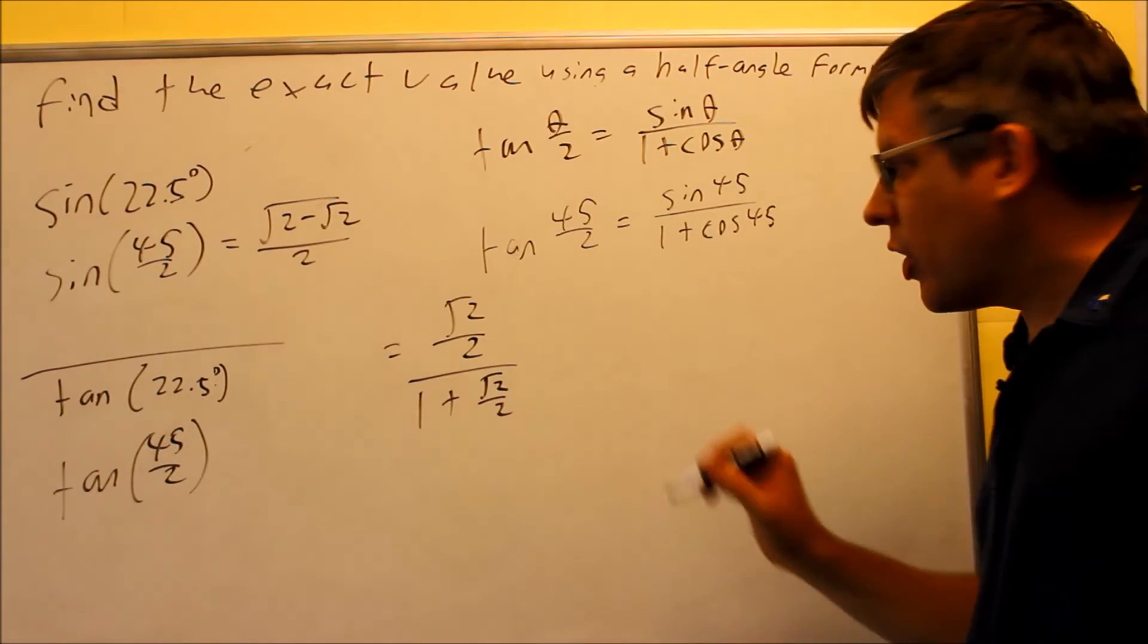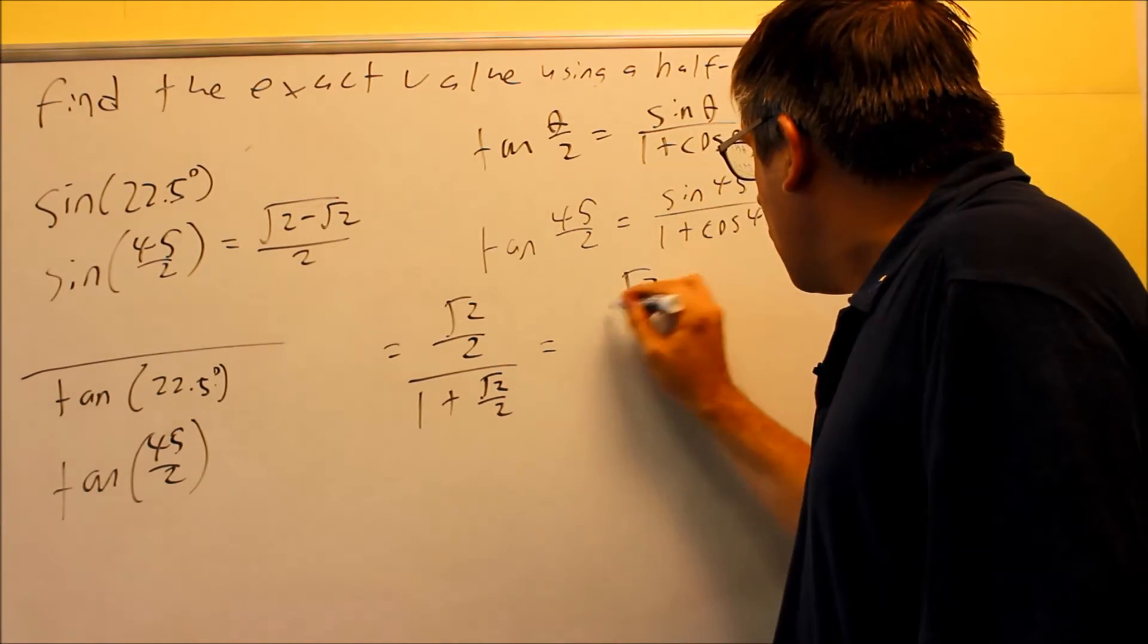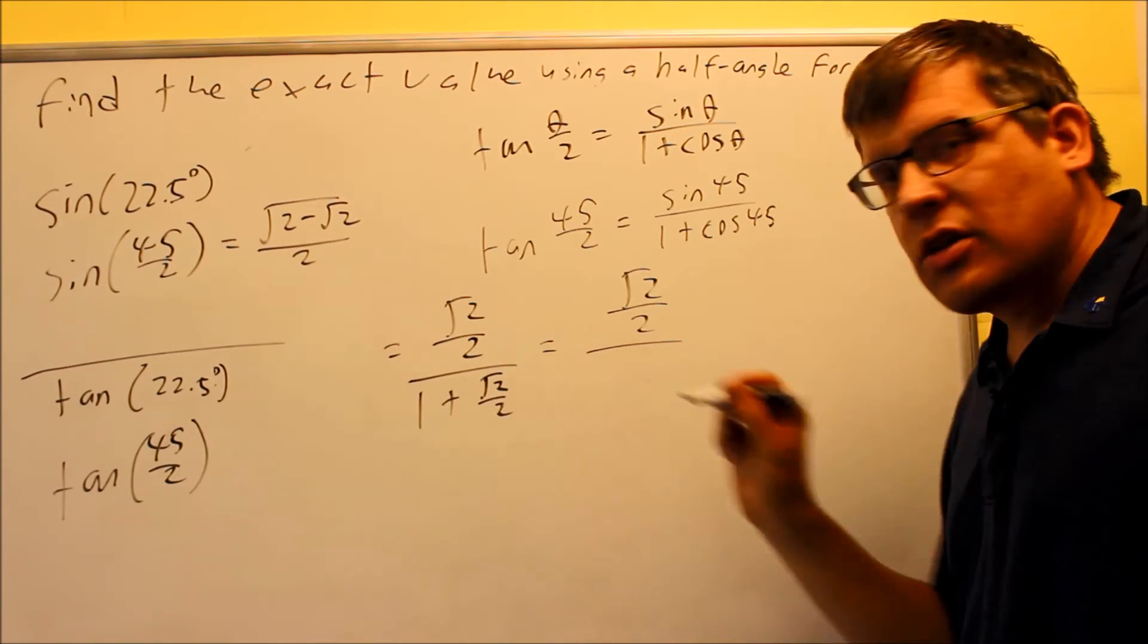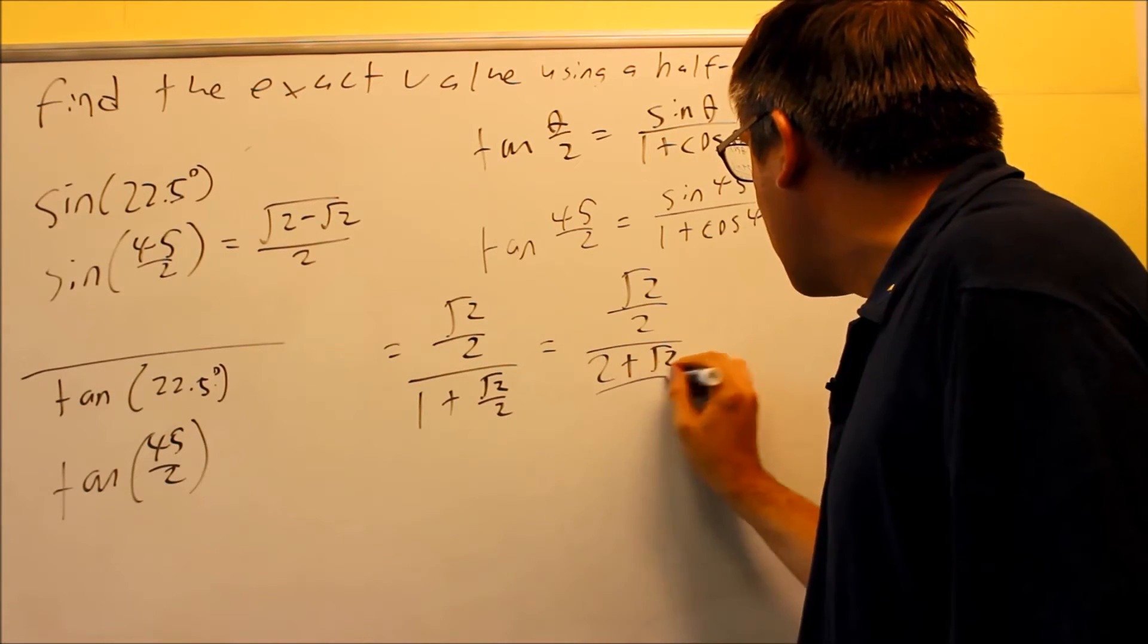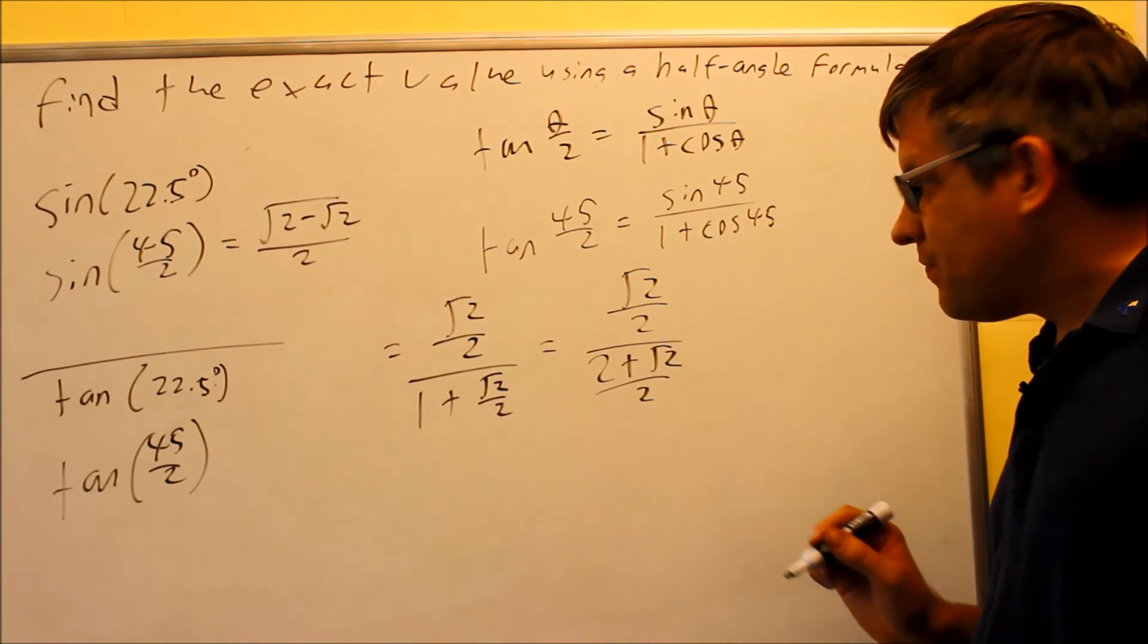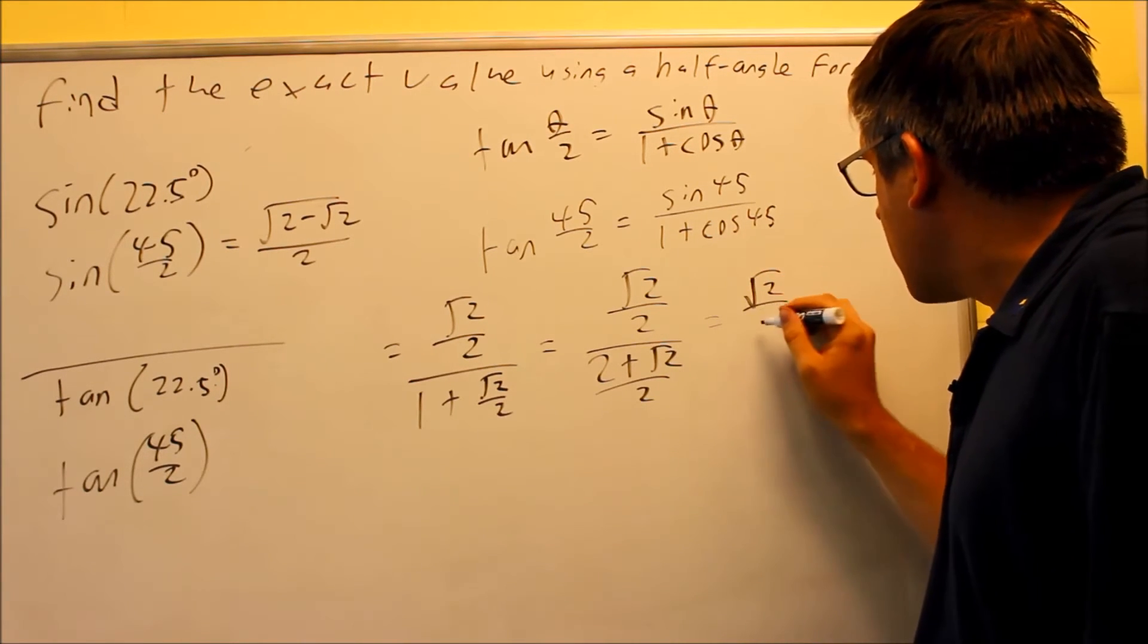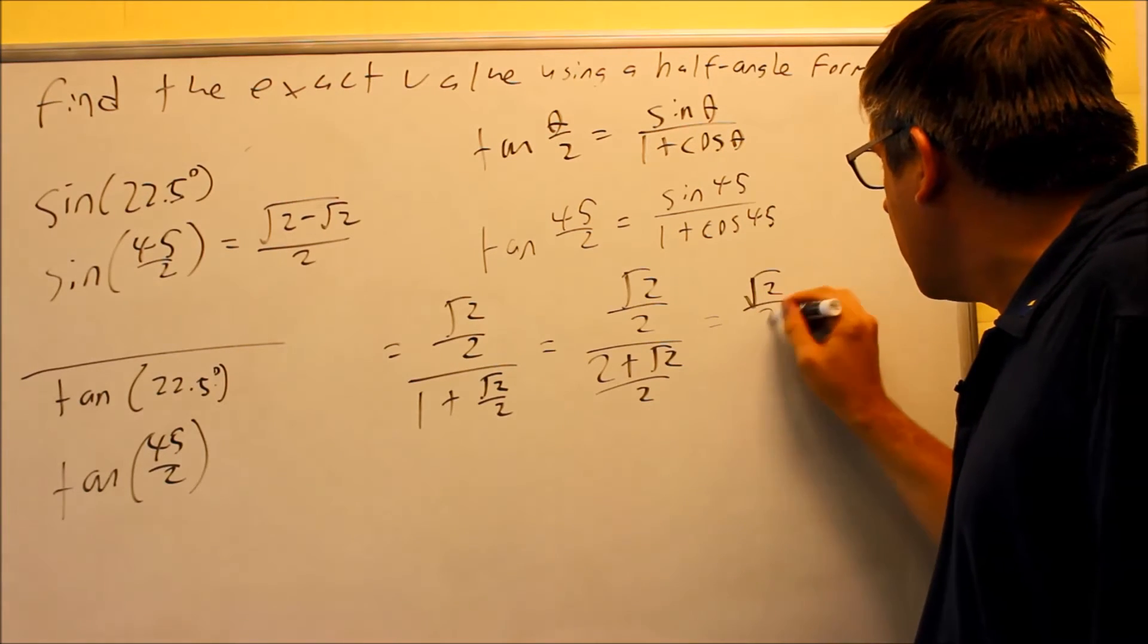We don't want to leave it in this form. We want to combine this together with common denominators on the bottom. So I'll multiply this by 2 over 2. You'll get 2 plus radical 2, all that over 2.